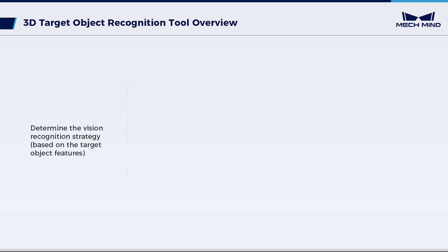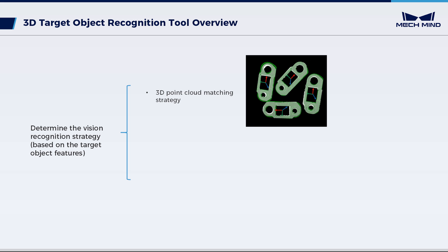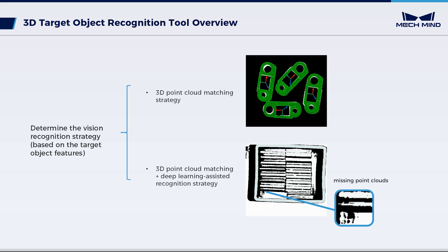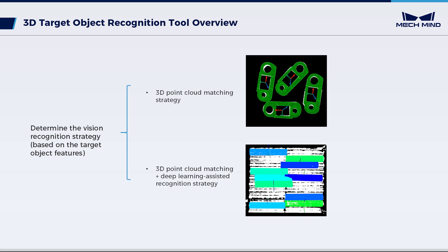There are two vision recognition strategies. One is the 3D point cloud matching strategy, which is suitable for most metal part recognition scenarios. The other combines that strategy with deep learning-assisted recognition, suitable for scenarios where high-reflective objects cause missing point clouds, or where tightly fitted objects cause closely adjacent point clouds resulting in incorrect matching.